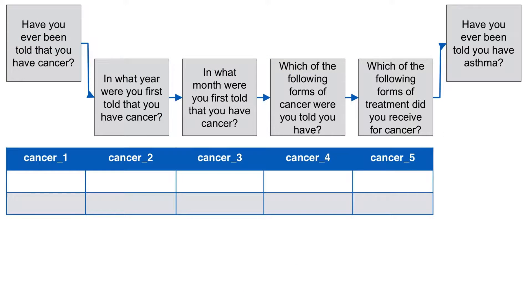Now let's think about how these responses will be represented in our data set. For starters, we'll need a variable to capture the response for each of the cancer questions. Here I'm just naming them cancer1 through cancer5. If this were a real survey, you'd likely want more descriptive variable names. Say the first participant was told that they have cancer at some point, so they will have a value of 1 for the variable cancer1. And because they had cancer, we asked them the rest of the child questions.